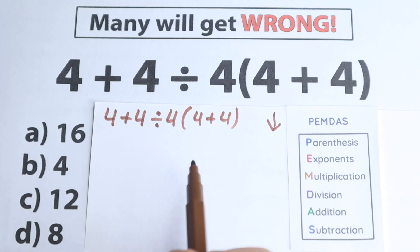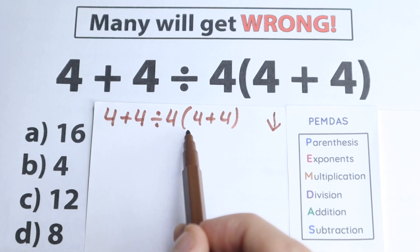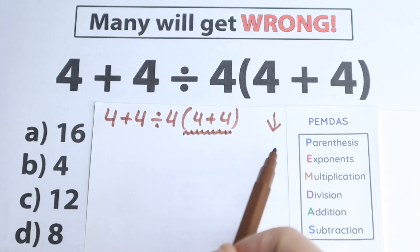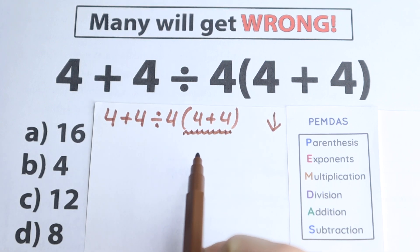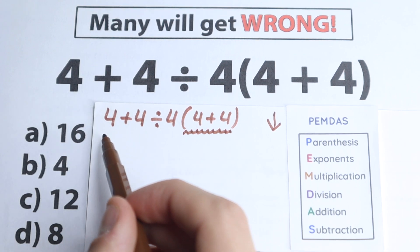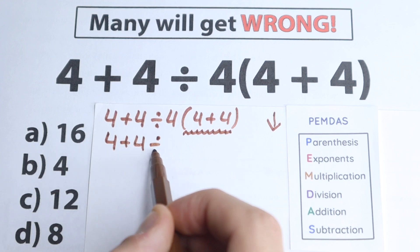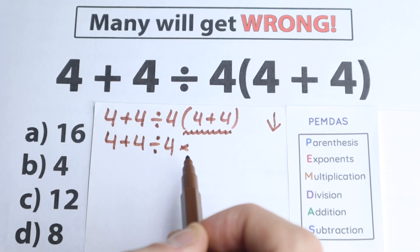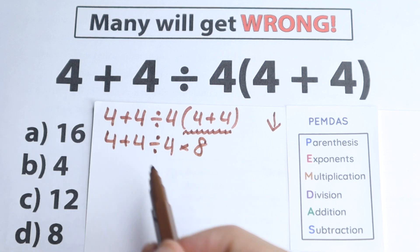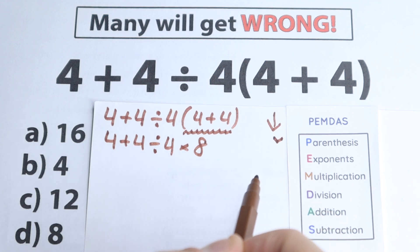Now we look at the expression from the perspective of parentheses — where do we have them? According to PEMDAS, in 99% of cases we start with parentheses. So we have 4 plus 4 divided by 4, times 4 plus 4, and the parentheses equal 8. So this expression is now resolved, and we move to the next step.